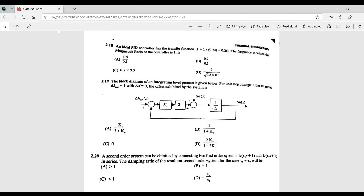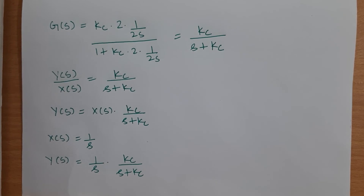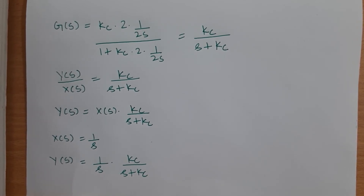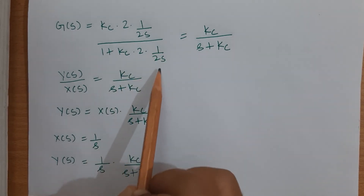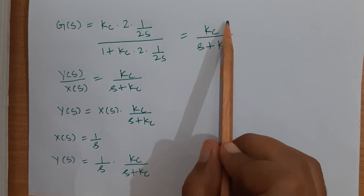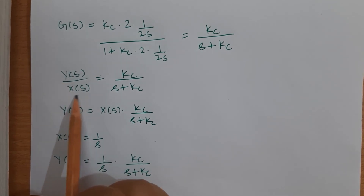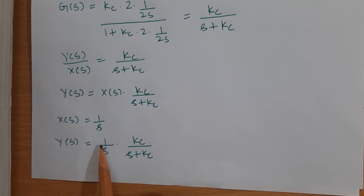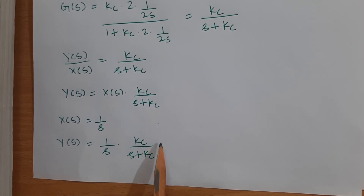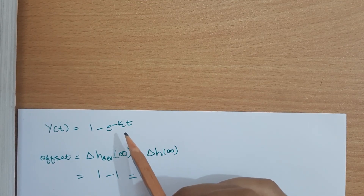Question 2.19: a block diagram is given and we need to find the offset. Offset is the difference between the ultimate value of the set point and the ultimate value of the response. First, find the transfer function: Kc·2·(1/2s) / (1 + Kc·2·(1/2s)), which simplifies to Kc/(s + Kc).